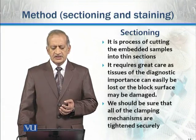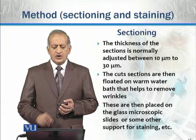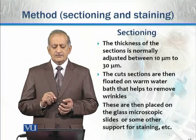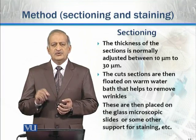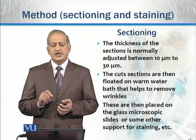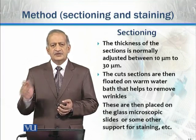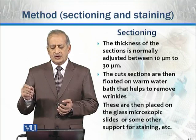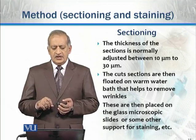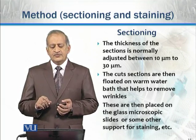Otherwise the block may be damaged. The thickness of the sections is normally adjusted between 10 micrometres to 30 micrometres, which we have already discussed in the case of a rotary microtome or other types of microtome. So when we operate the microtome, the tissue of the desired thickness is cut.